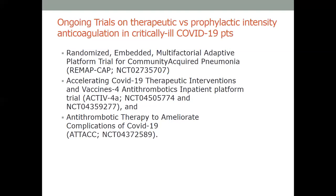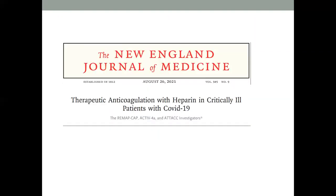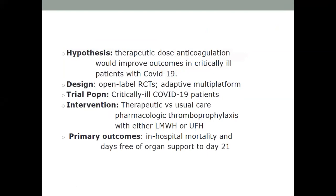Preliminary data came and now we have a peer-reviewed version — ASH is planning to revise their previous recommendation. One of the studies from this collaborative effort is 'Therapeutic Anticoagulation with Heparin in Critically Ill Patients with COVID-19,' published in the New England Journal of Medicine. The hypothesis was that therapeutic dose anticoagulation would improve outcomes in critically ill COVID-19 patients, since micro and macro thrombosis and respiratory failure are considered to be leading causes of morbidity and mortality.